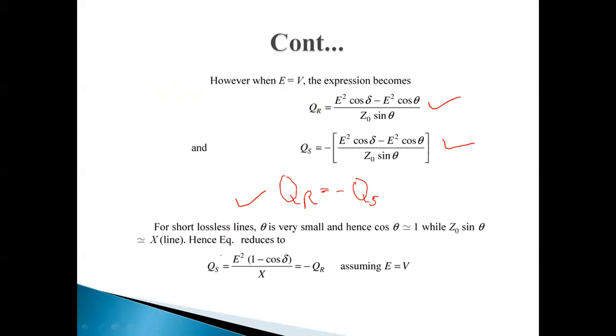For short lossless lines, beta*l is very small, so the short transmission line approximation applies.